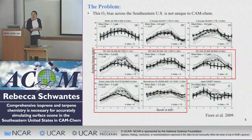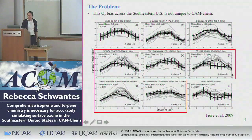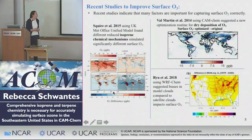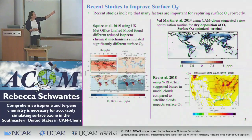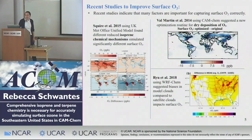The bias in the Southeast US is not unique to CAM-Chem. This older Fiore 2009 paper shows many models in gray and observations in black — the Eastern US sites, highlighted in red, always show a summer ozone bias. Recent work has explored why: Squire et al. 2015 looked at reduced isoprene mechanisms; Val Martin et al. 2014 found dry deposition of ozone particularly important for the Eastern US; and Rood et al. 2018 used WRF-Chem to show cloud biases also impact surface ozone.